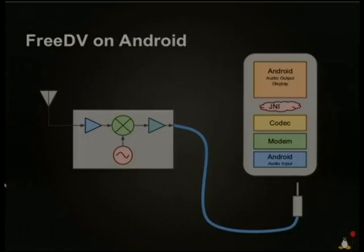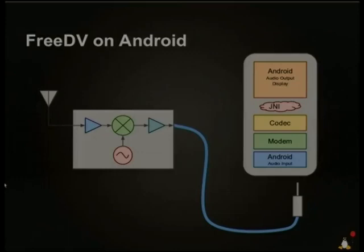Initially the idea was to do this the same way FreeDV works on PC — just plug into the line-in of the phone the same way you plug into a laptop. It turns out it's much more complicated than that, because Android phones have a microphone input for lapel mics but every manufacturer implements the pinout slightly differently, requiring different resistances between pins. So you can't just make a cable and have it work on anyone's phone. I wanted this thing to be accessible by anyone.